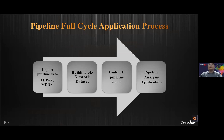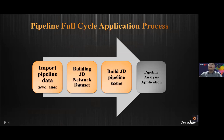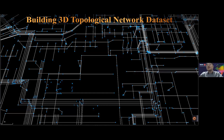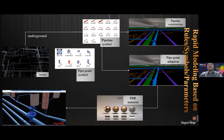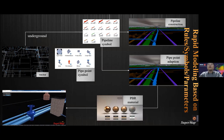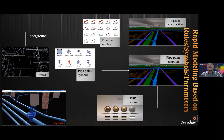After solving the problem of data import and storage, we need to create the 3D network dataset and build a 3D pipe network scene based on the 3D line dataset. The 3D topological network dataset has no style of lines and points and is mainly used to represent the connection relationships of pipe networks, facilitating subsequent spatial network analysis. We can use the pipeline rendering method on line datasets in 3D scenes, then add PBR materials to build a more realistic 3D pipe network scene.